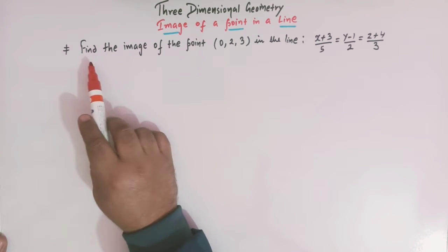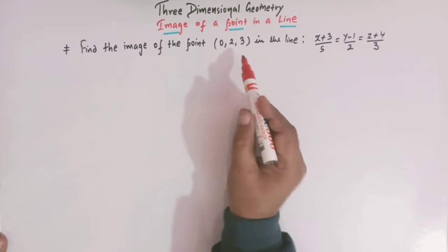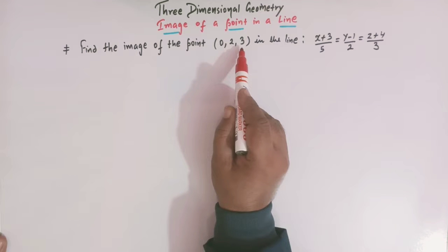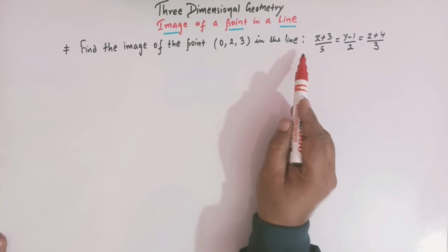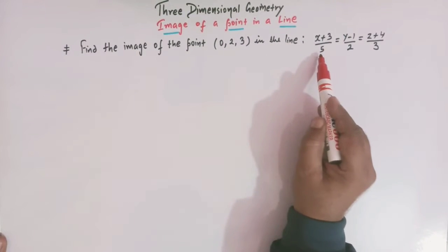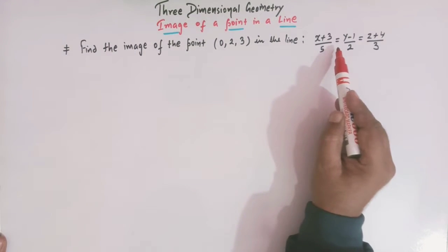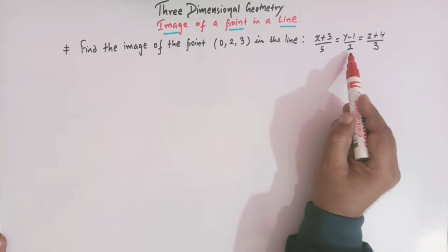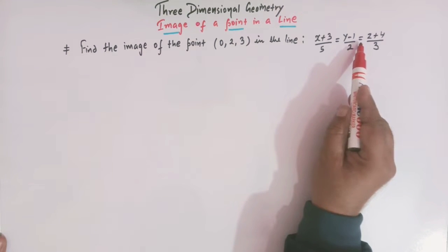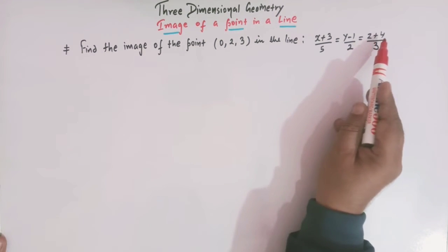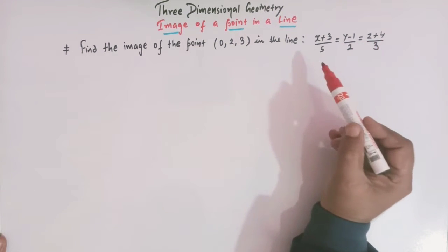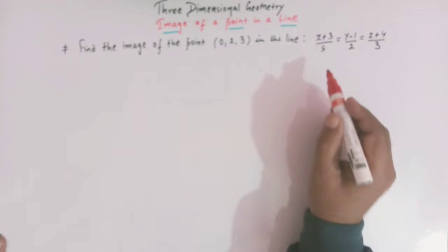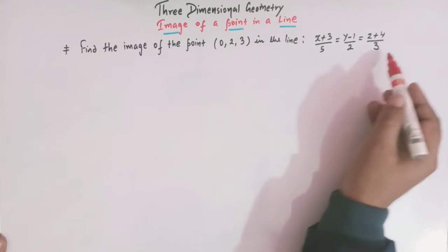Find the image of the point (0, 2, 3) in the line: (x + 3)/5 = (y − 1)/2 = (z + 4)/3.